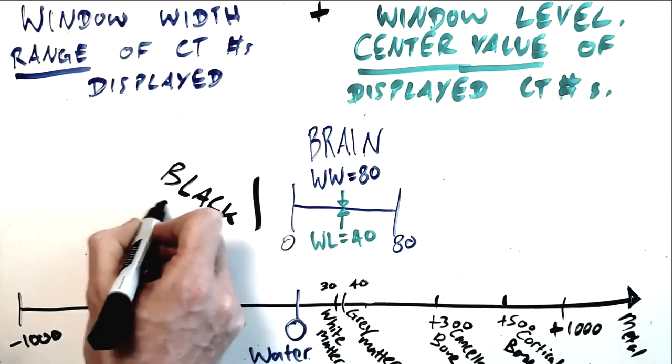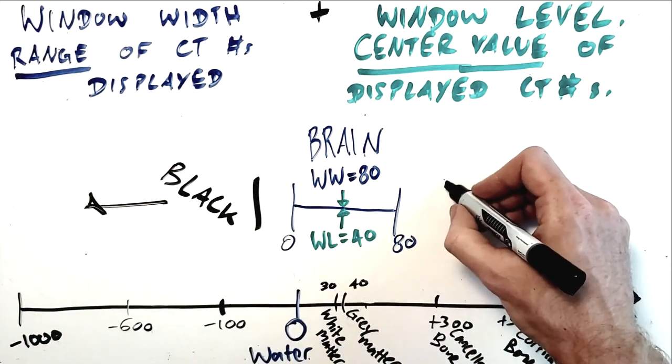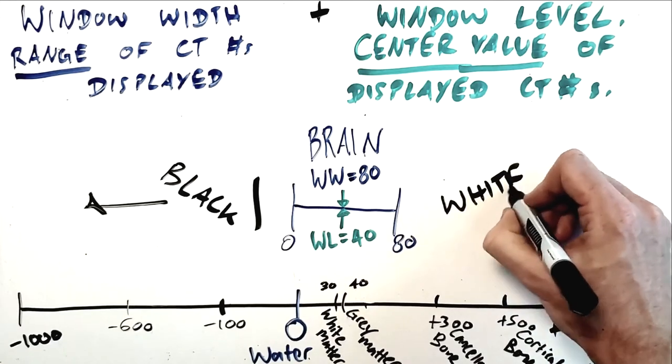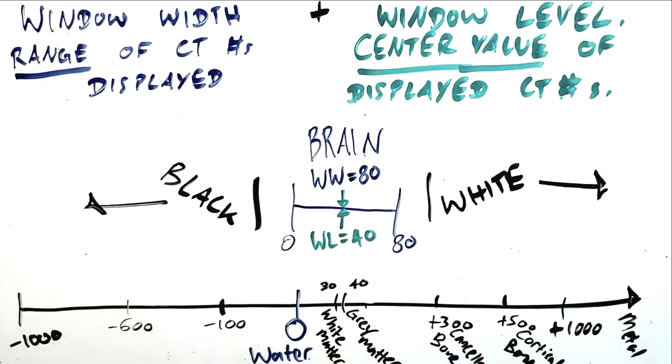And any tissue with a CT number below 0 is black. Any tissue with a CT number above 80 is white.